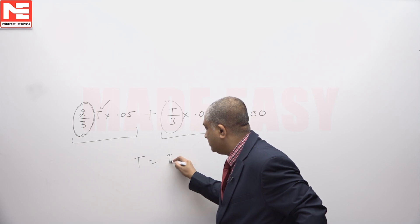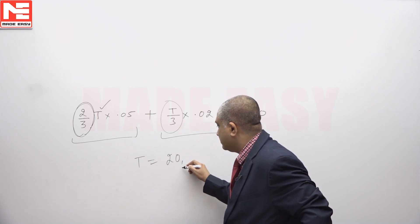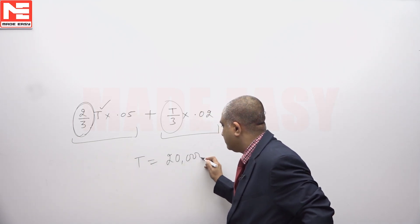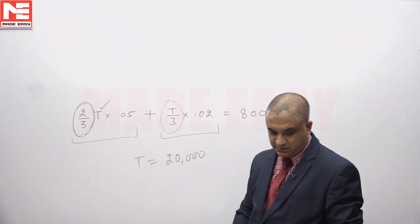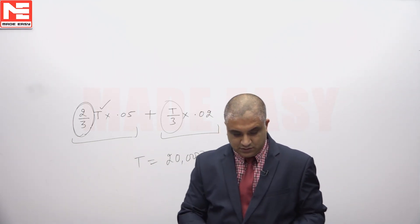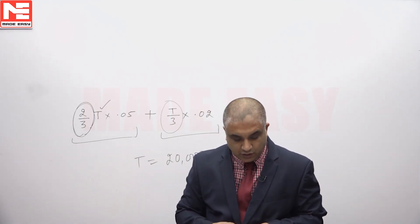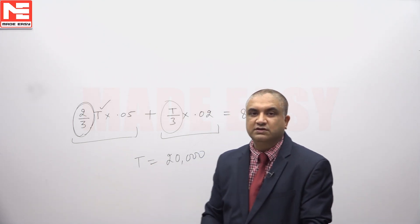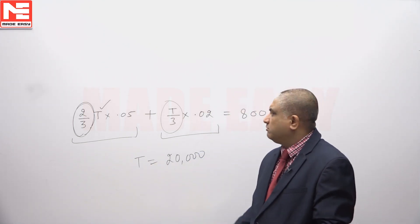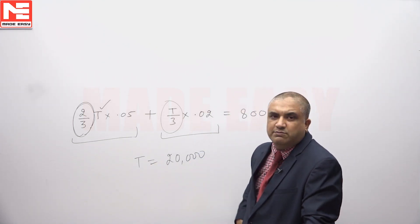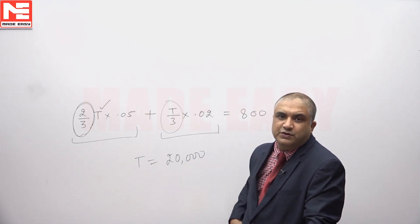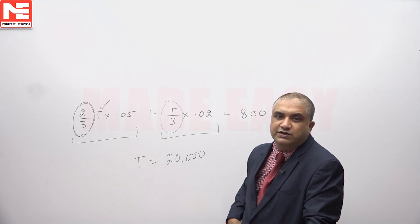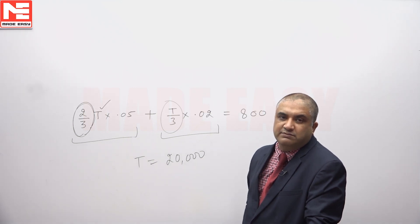The total value of the consignment comes out to be 20,000. So the answer is option A — 20,000. A simple problem of linear equation in one variable.